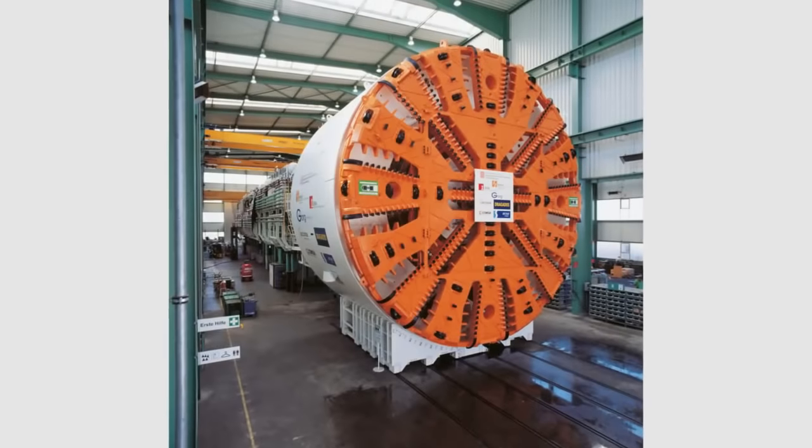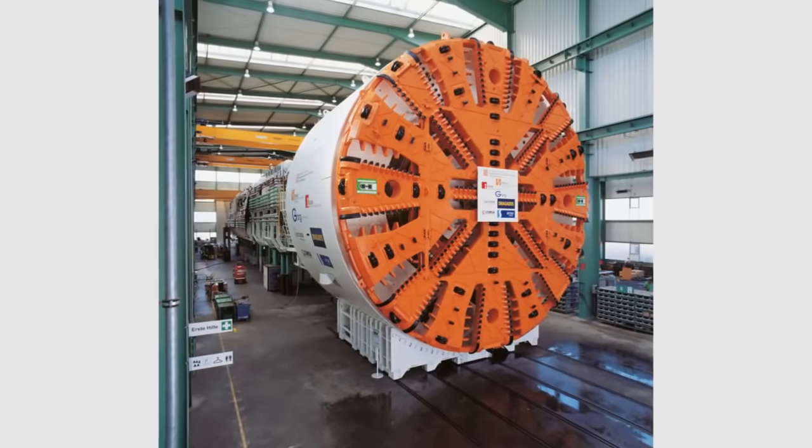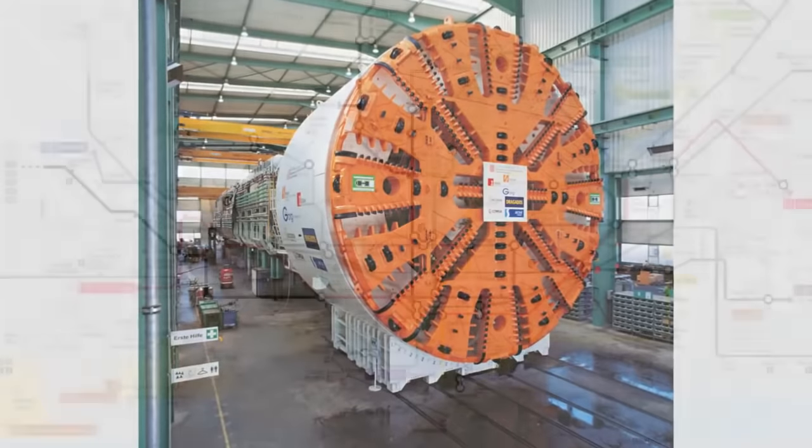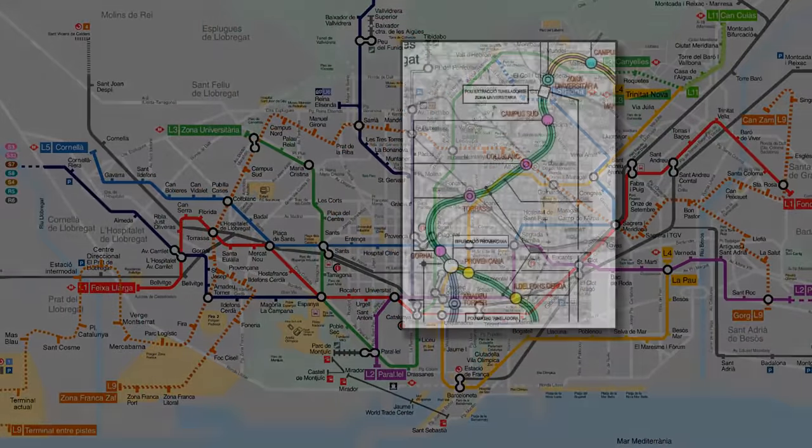The following computer animation shows the way earth pressure balance shields work, taking as an example the Hermann Connect EPB shield used for a subway construction project in Barcelona.